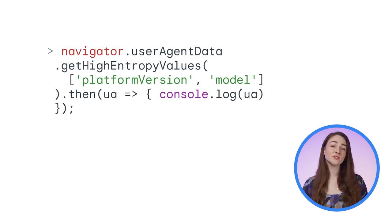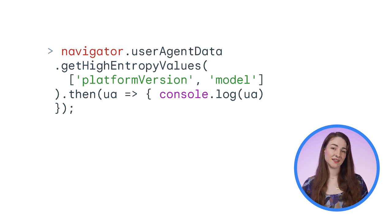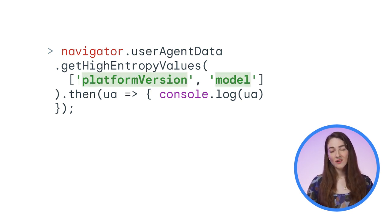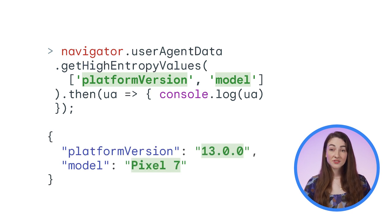You can do the same thing in JavaScript by calling getHighEntropyValues on the user agent data API. You can see here I'm making that call, passing in an array of values I want: platform version and model. This returns a promise with an object containing those specific values.